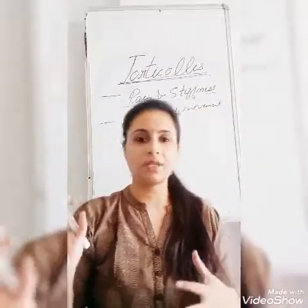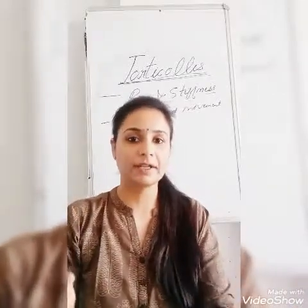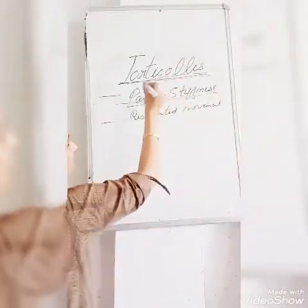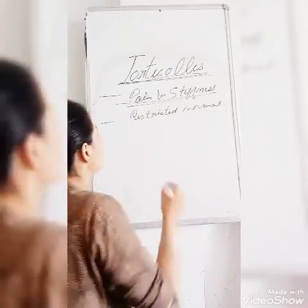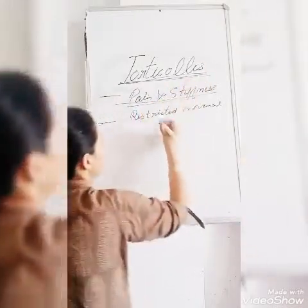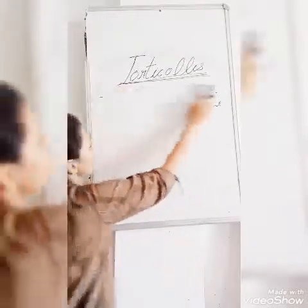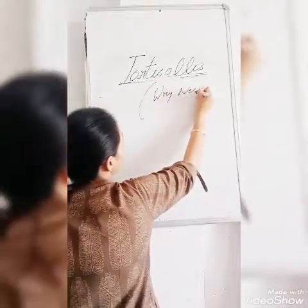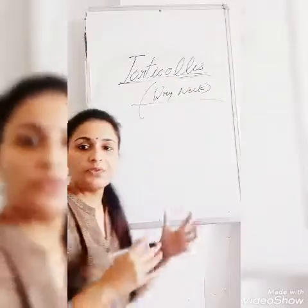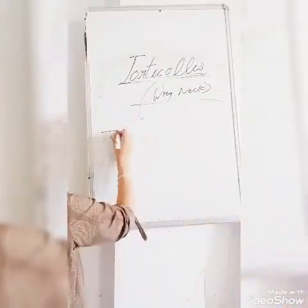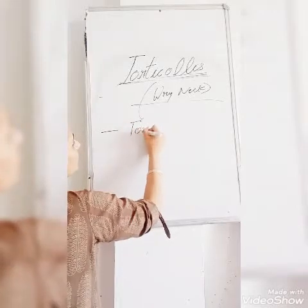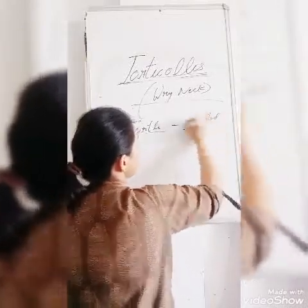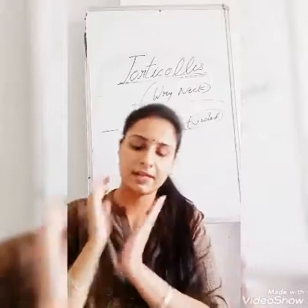The patient will not be able to move the neck normally, and other activities also get hindered or affected. This condition involves pain and stiffness, and it is also called wry neck. Torticollis is that's why called wry neck. The word torticollis comes from the Latin word which means twisted — 'tortus' means twisted.